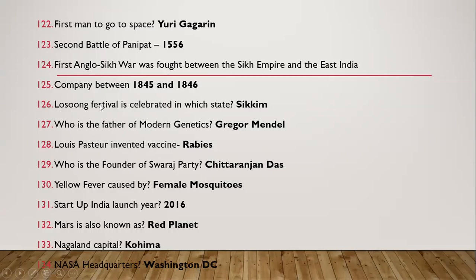Question 124: Losung festival is celebrated in which state? It is celebrated in Sikkim. Question 125: Who is the father of modern genetics? It is Gregor Mendel. Question 126: Louis Pasteur invented the vaccine for rabies.